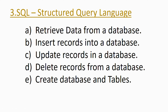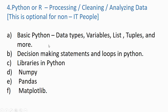Now, coming to Python or R languages. You need to learn at least basic Python, especially for non-technical persons. Technical persons already know the basics, but non-technical persons need to learn basic Python — covering data types, variables, lists, tuples, and more. Also decision-making statements and loops in Python. These topics need to be learned by both technical and non-technical persons. If they have more skills, they can go with Python libraries such as NumPy, Pandas, and Matplotlib.